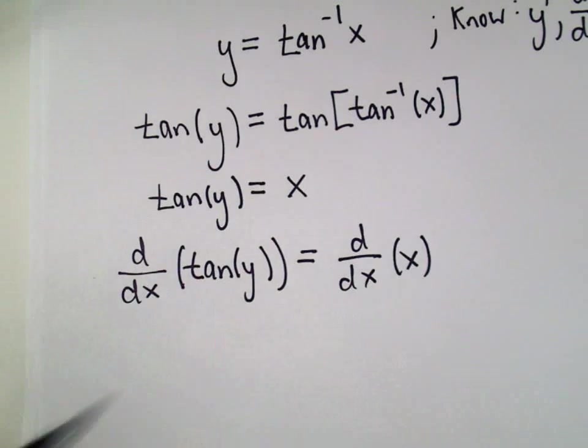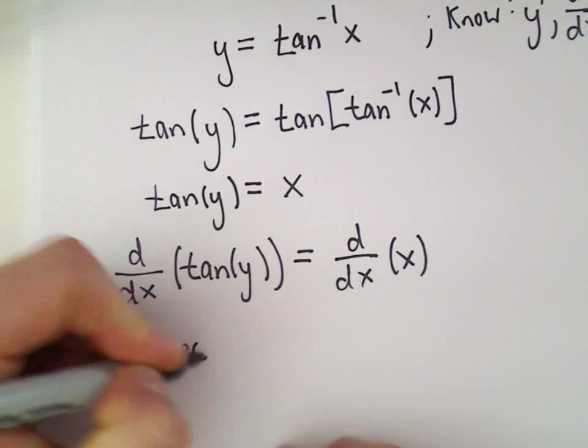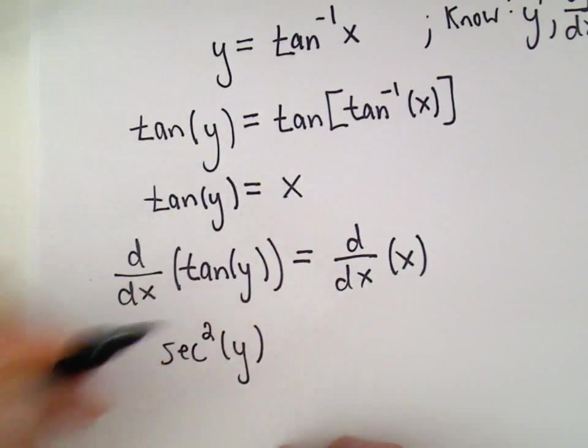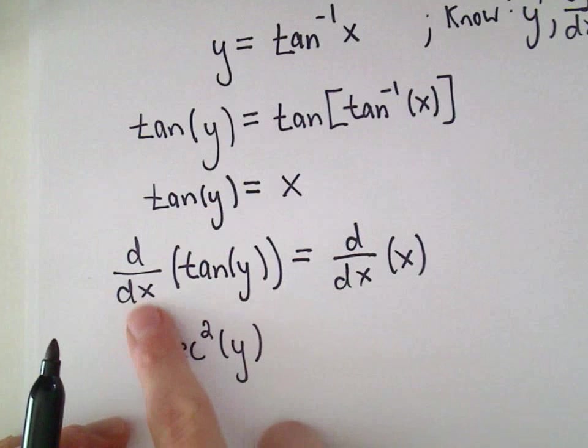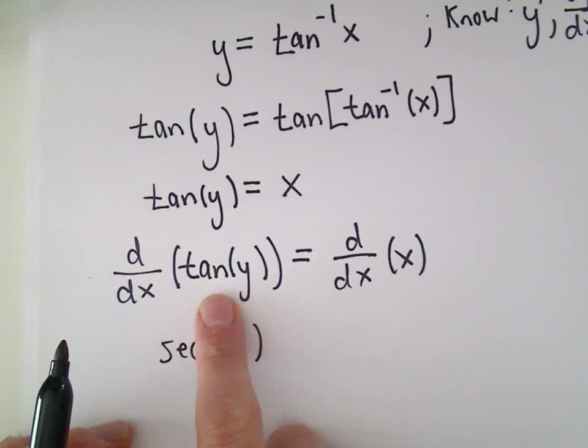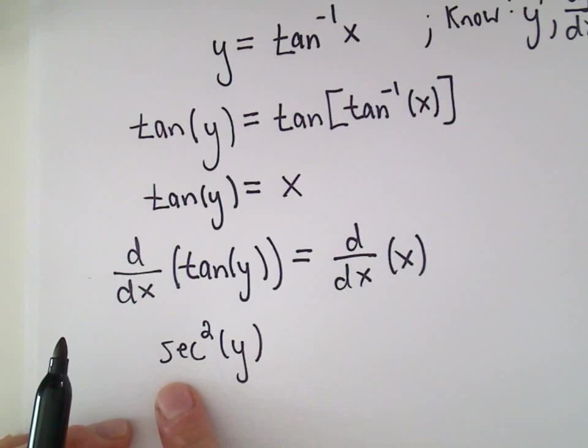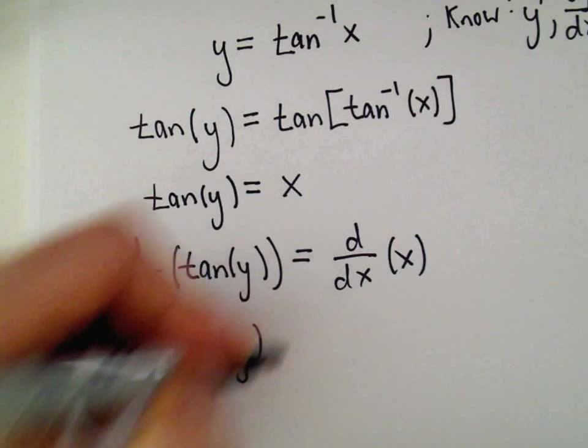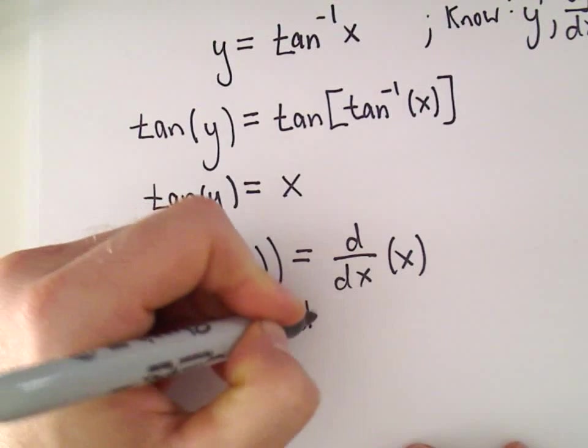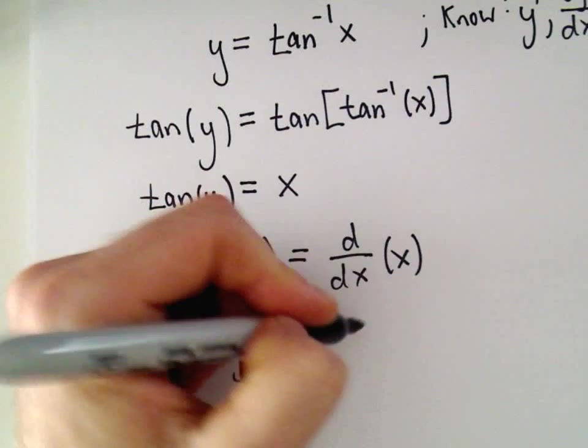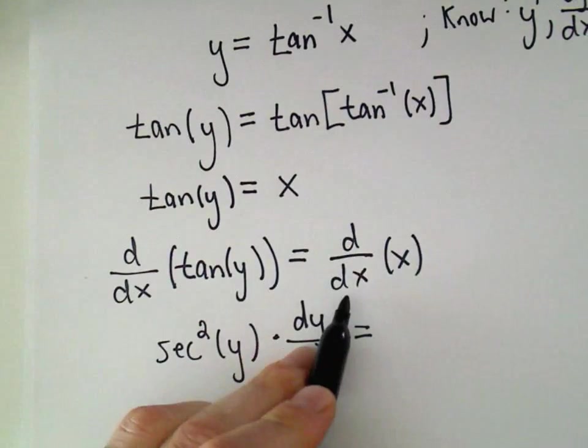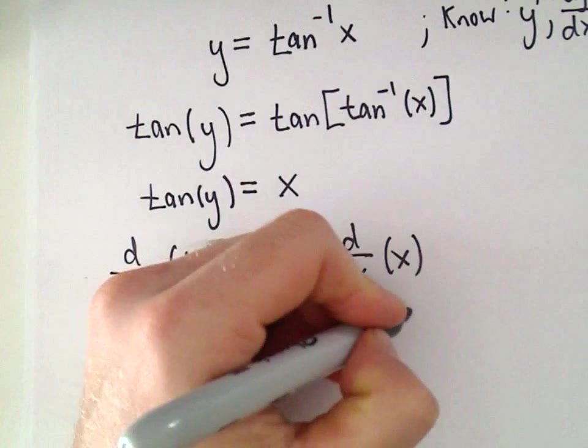So the derivative for tangent is secant squared of y. But in this case, we're going to have to do implicit differentiation, because we're taking the derivative with respect to x of something involving y. So we'll do it like normal, so we'll get secant squared y. But remember, in these cases, you have to tack on dy over dx. On the right side, the derivative with respect to x of x is just 1.